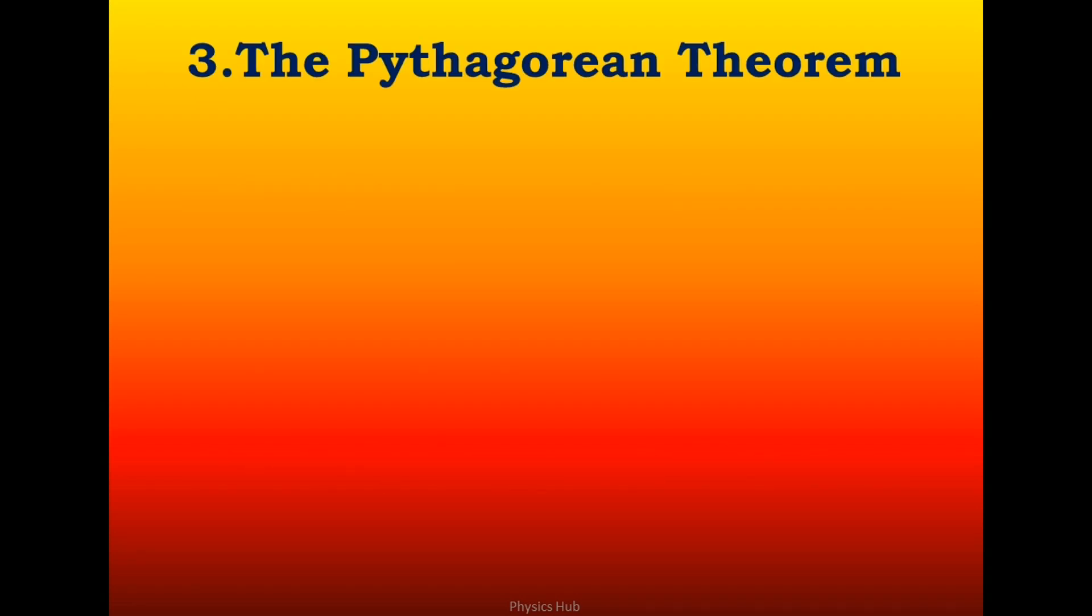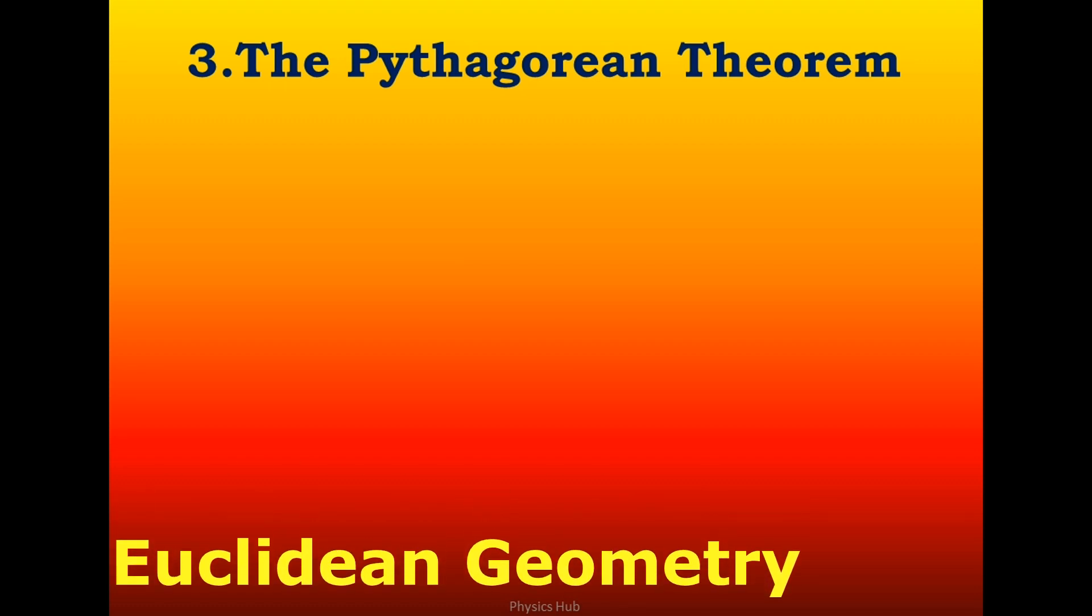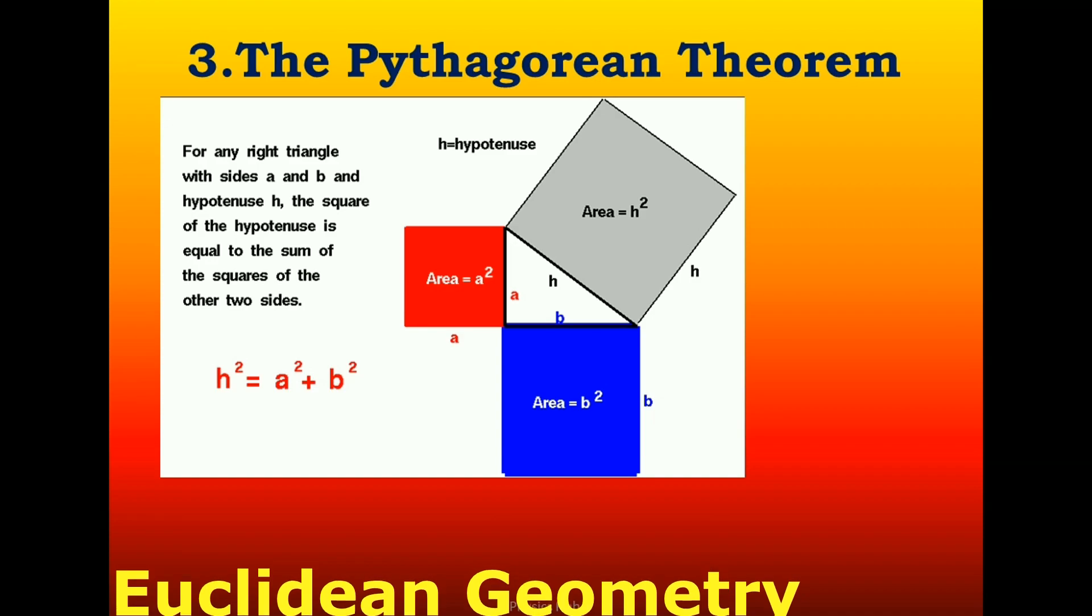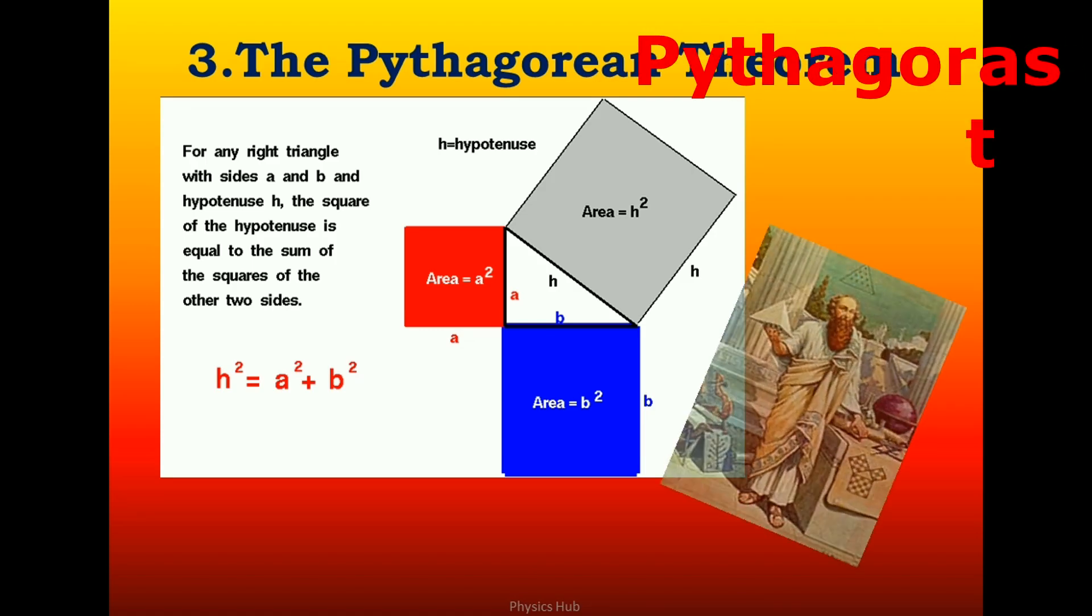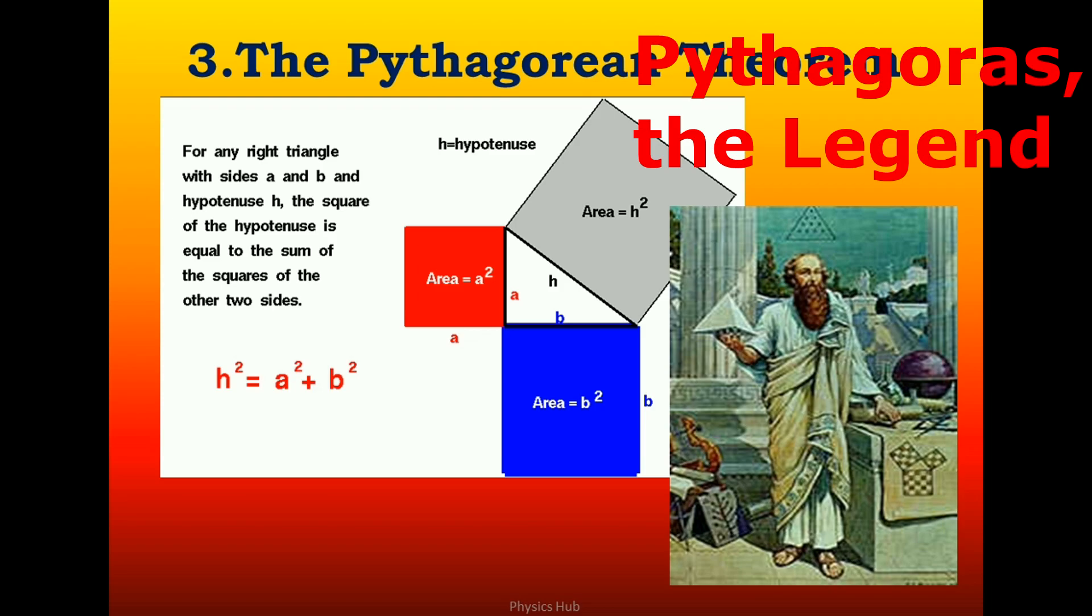The third equation comes under this is the Pythagorean theorem. In mathematics, the Pythagorean theorem, also known as Pythagoras's theorem, is a fundamental relation in Euclidean geometry among the three sides of a right angle. It states that the square of the hypotenuse is equal to the sum of the squares of the other two sides. As you can see, h squared equals a squared plus b squared.